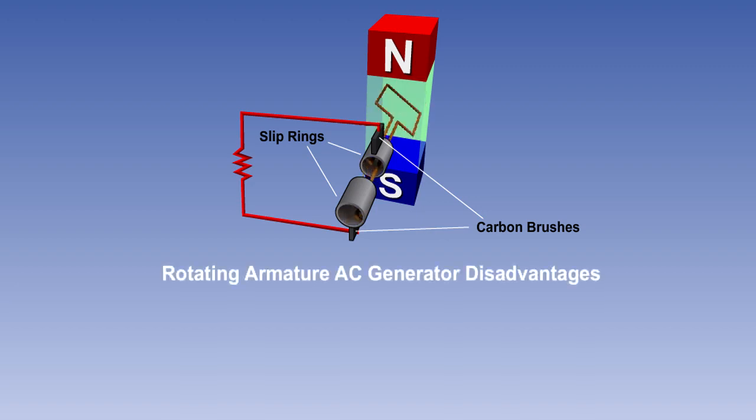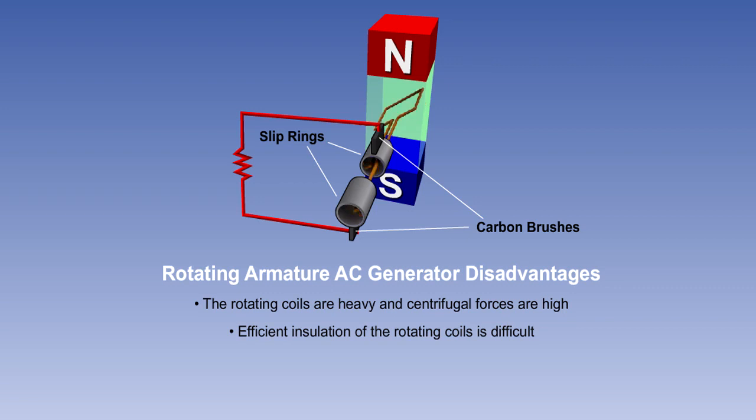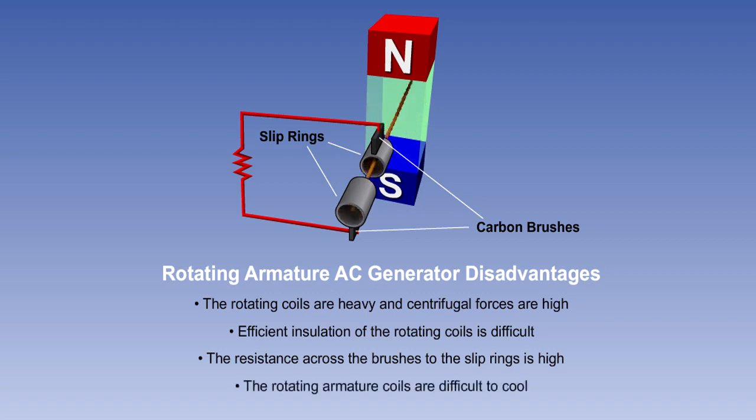Rotating armature AC generators suffer from a number of disadvantages. The rotating coils are heavy, and centrifugal forces are high. Efficient insulation of the rotating coils is difficult. The resistance across the brushes to the slip rings is high. And the rotating armature coils are difficult to cool.